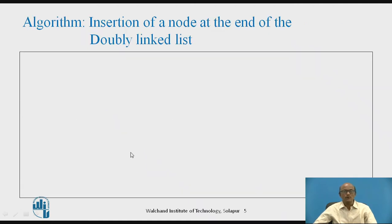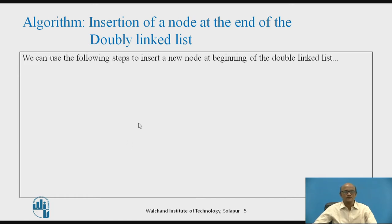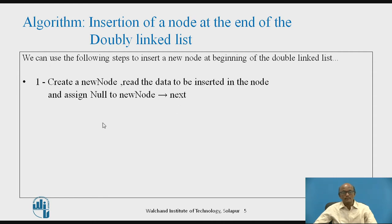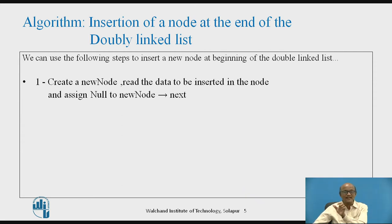Now we will see the algorithm for how to insert a node at the end of the doubly linked list. The first step is to create a new node, read the data to be inserted into the data part, and set new_node->next to null, because we are inserting at the end, so the last node's next pointer will always be null.